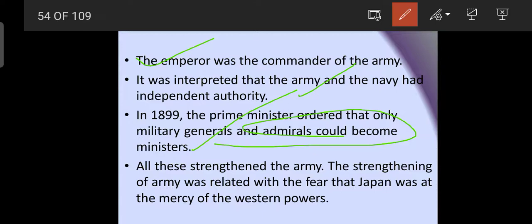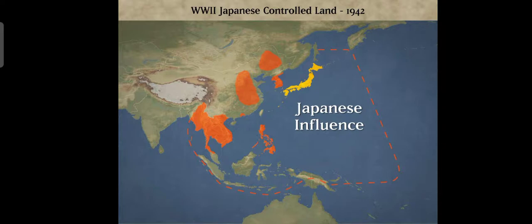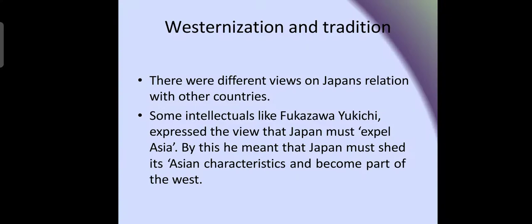These developments strengthened the military. There was also a fear that if Japan adopted too much of the Western system, it would become completely dependent on Western power. The emperor was commander of the army, and the army and navy were interpreted to have independent authority. During World War Two, when Japan was achieving early victories, it conquered considerable territories.